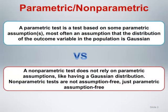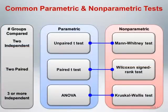A parametric test is a test based on some parametric assumption, most often an assumption that the distribution of the outcome variable in the population is Gaussian. A nonparametric test does not rely on parametric assumptions, like having a Gaussian distribution. Nonparametric tests are not assumption-free, just parametric assumption-free. This figure provides an overview of the parametric and nonparametric tests we will be discussing in this module. We will first discuss tests for two independent groups, then two paired groups, and then tests for three or more independent groups.